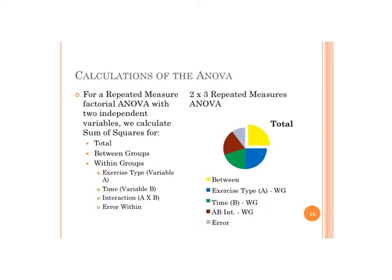Looking at how variance is partitioned, we have the same idea as one-way repeated measures: between-subjects variance is pulled out as a constant, and then within-groups variance is split into explained and unexplained components. With two independent variables and an interaction term, we subdivide within-groups variance into what's explained by exercise type, by time, and by the interaction. The interaction is tested first, and the main effects only if the interaction is non-significant.